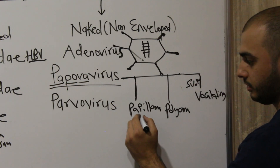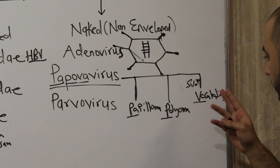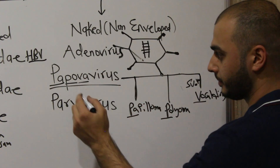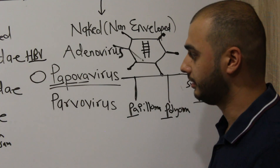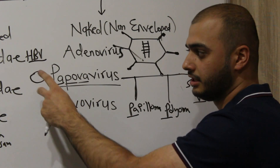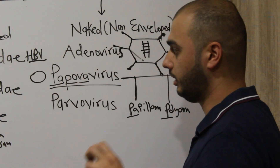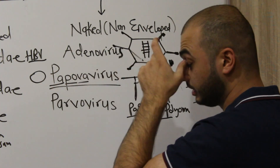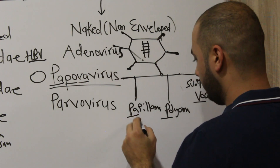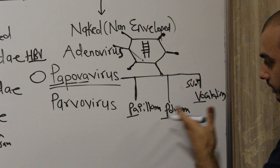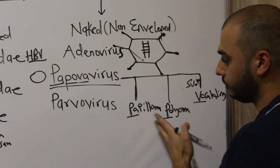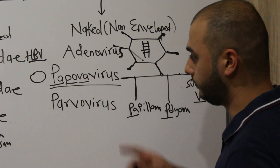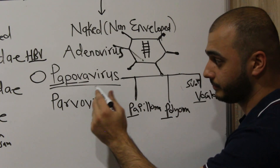Due to its circular DNA genetic code, Papovaviridae has highly oncogenic features. This virus is highly oncogenic, and all its subtypes are also very oncogenic viruses, making it a very dangerous virus. We will discuss this in detail in the next videos.